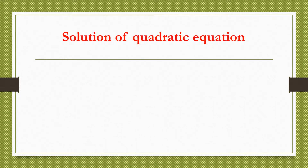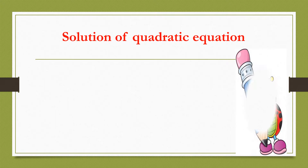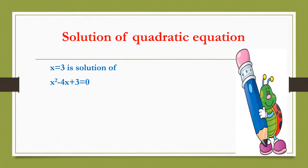The value of x which satisfies the equation is called the solution of the equation or root of the equation. For example, x equal to 3 is the solution of the equation x square minus 4x plus 3 equals to 0.